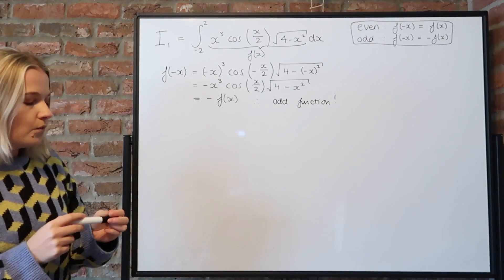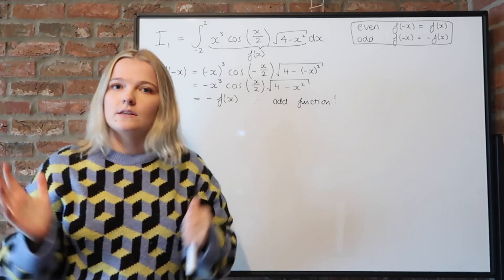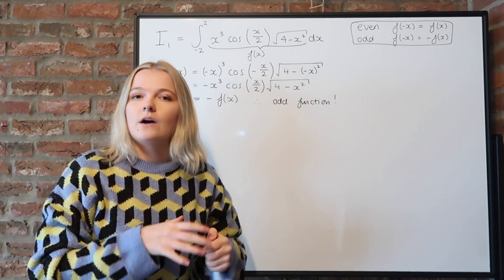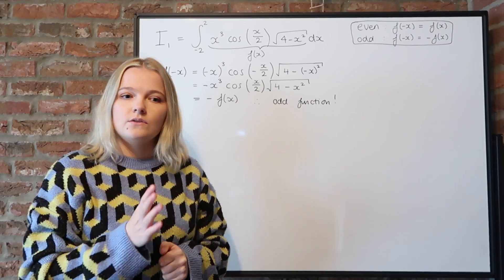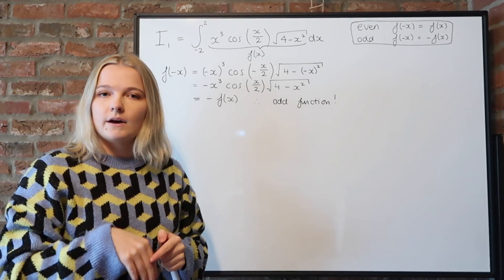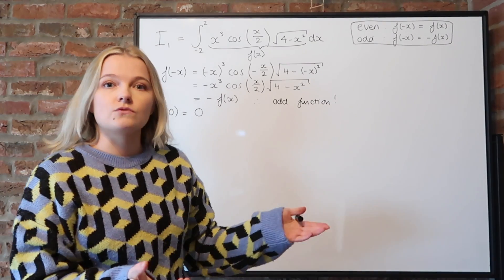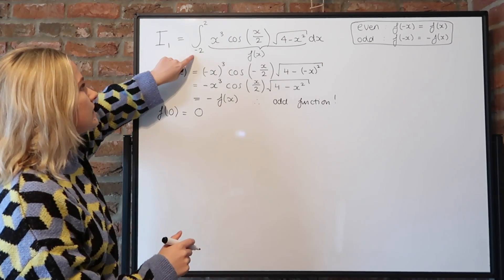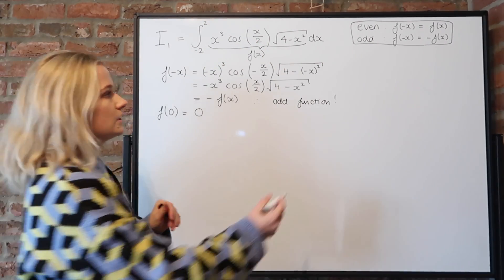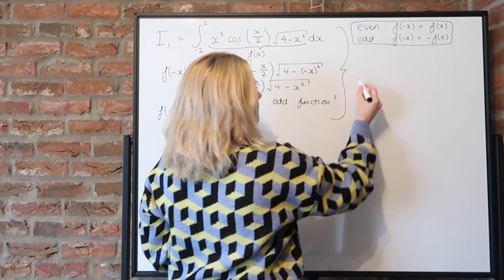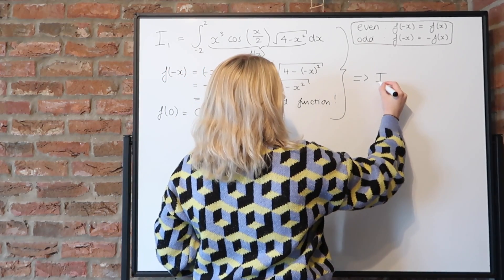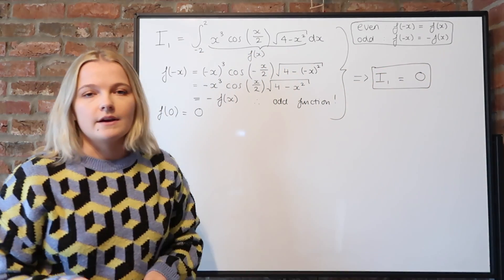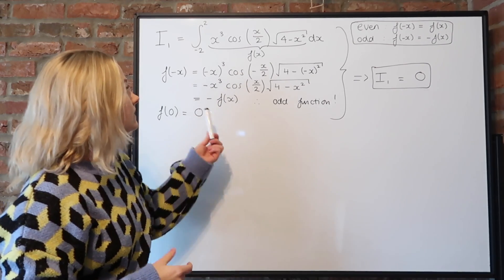One thing to note is that just knowing it's an odd function doesn't automatically mean the integral is zero — you also need limits that are symmetric, i.e., a and minus a. Our limits are 2 and minus 2, which satisfies that condition. Therefore, I1 equals zero.